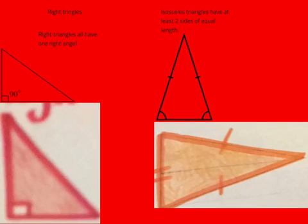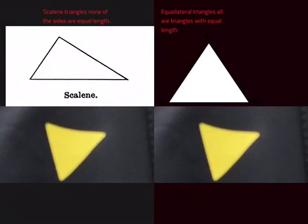Right triangles have a right angle. Isosceles triangles have at least two sides of equal length. Scalene triangles have no sides of equal length. Equilateral triangles have all sides of equal length.